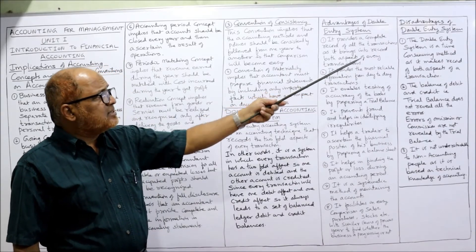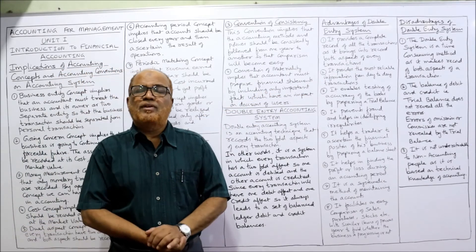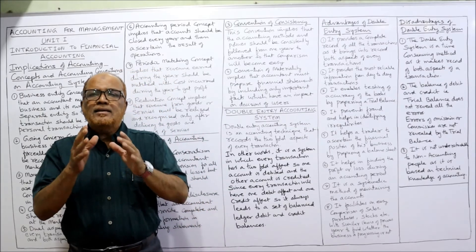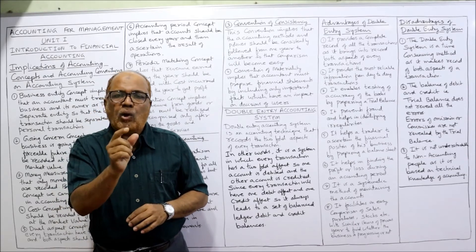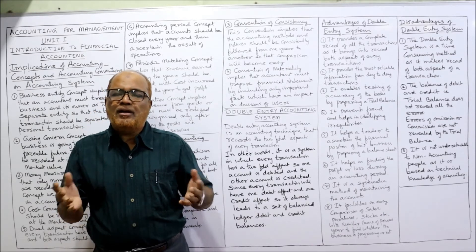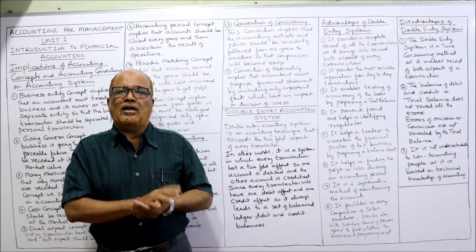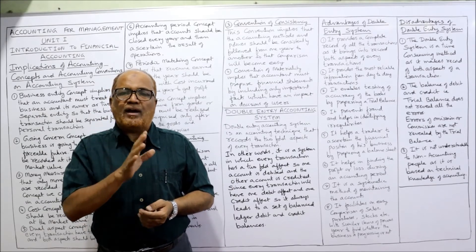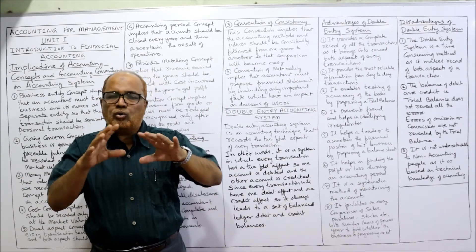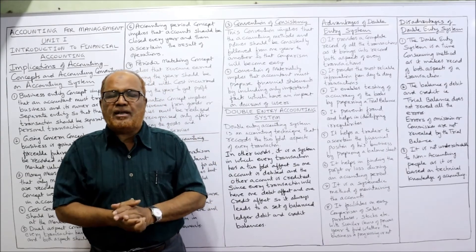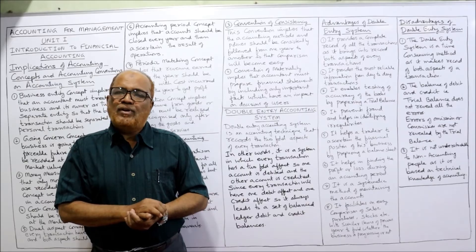Now, the disadvantages. The first disadvantage is that the double entry system is time-consuming, as it records both aspects of every transaction. More time is required and more technical knowledge is required — not everybody can maintain the accounts. One must have knowledge of accounting: which account to debit, which account to credit, how to make the ledger, the journal, the trial balance.